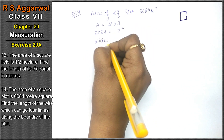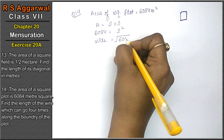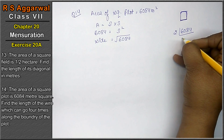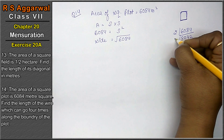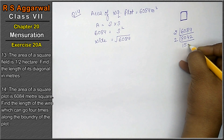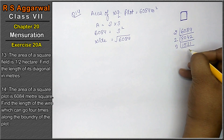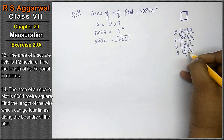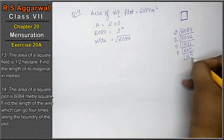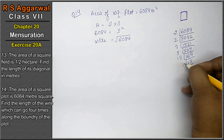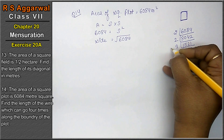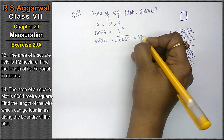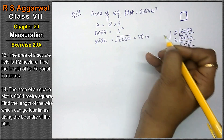Side निकालने के लिए √6084 लेंगे. 6084 का square root निकालेंगे: 2 × 3 × 13 × 2 × 3 × 13 = 6084. तो 13, 3, और 2 बाहर आ गए. 13 × 6 = 78 meters.